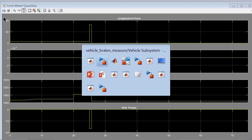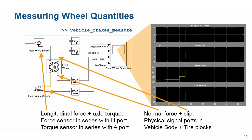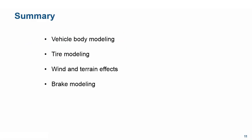Let's recap. We added brakes using the built-in Loaded Contact Rotational Friction block and actuated them with force inputs, observing the vehicle stop earlier than before. We then talked about adding more sensors including ideal force and torque sensors for analysis and validation — for instance checking non-zero normal forces during braking or using wheel longitudinal forces and slip measurements as inputs to traction control systems. In summary, we covered modeling vehicle bodies, tires, wind and terrain effects, and brakes. This concludes the video.